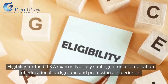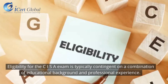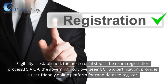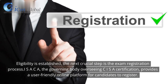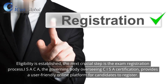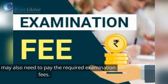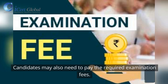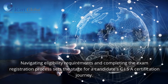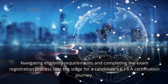Eligibility and Exam Registration. Eligibility for the CISA exam is typically contingent on a combination of educational background and professional experience. Once eligibility is established, the next crucial step is the exam registration process. ISACA, the governing body overseeing CISA certification, provides a user-friendly online platform for candidates to register. Candidates may also need to pay the required examination fees. Navigating eligibility requirements and completing the exam registration process sets the stage for a candidate's CISA certification journey.